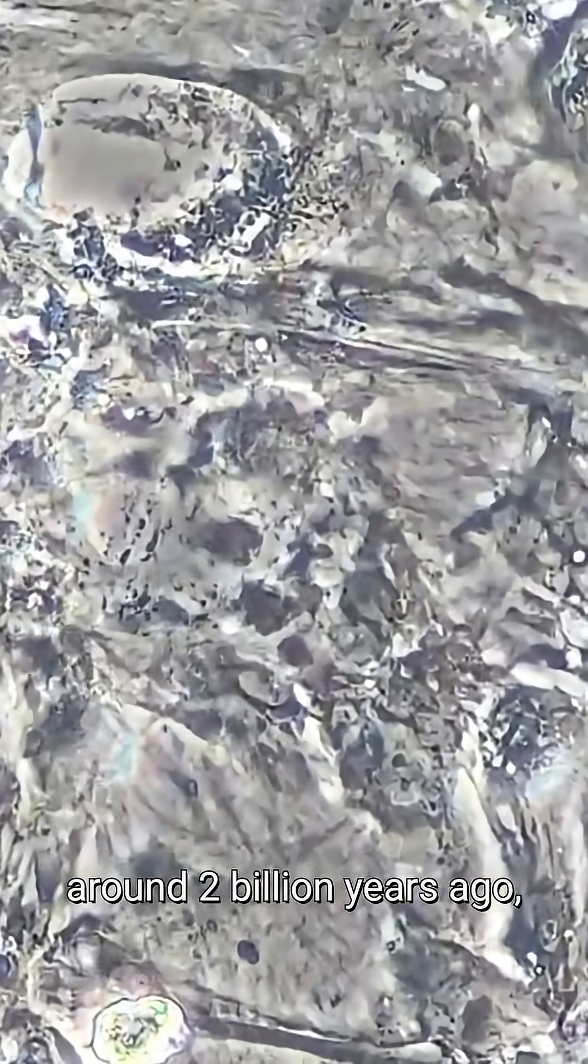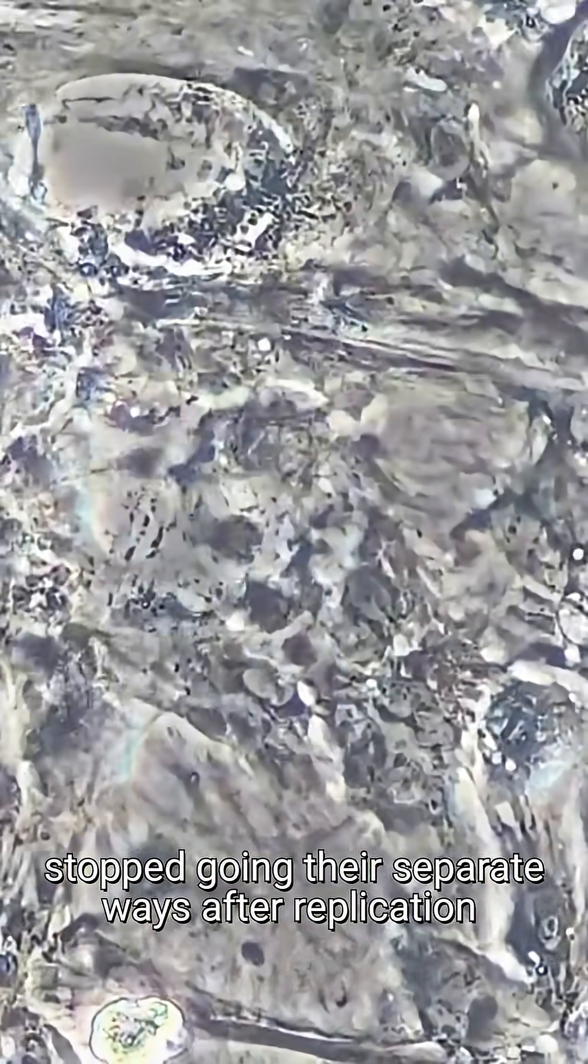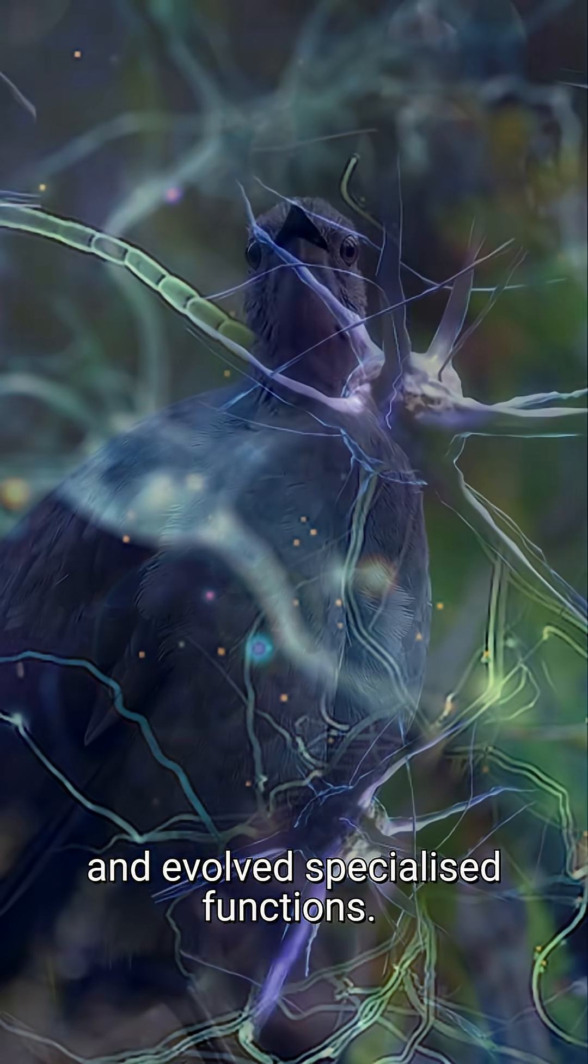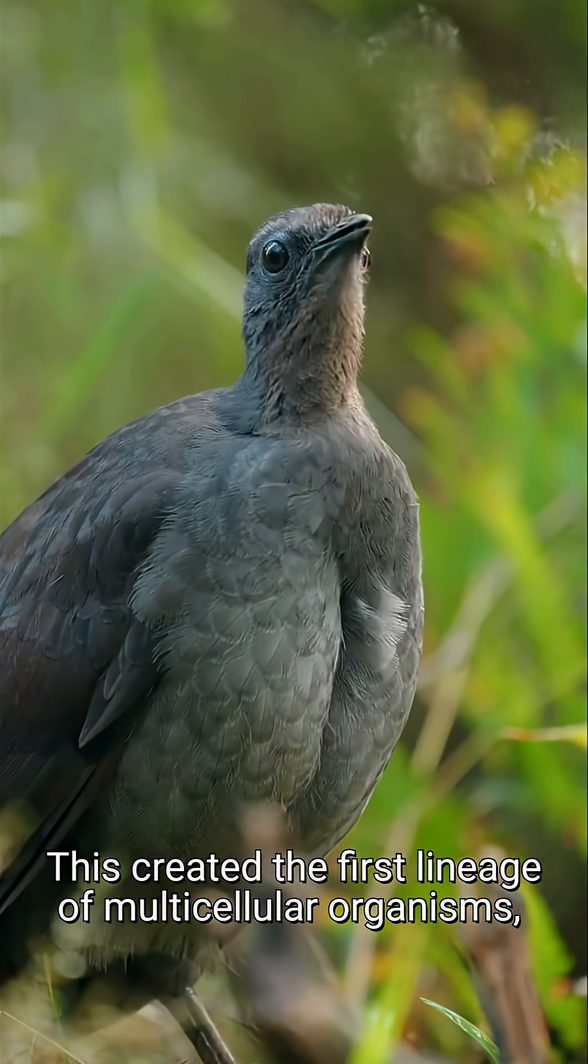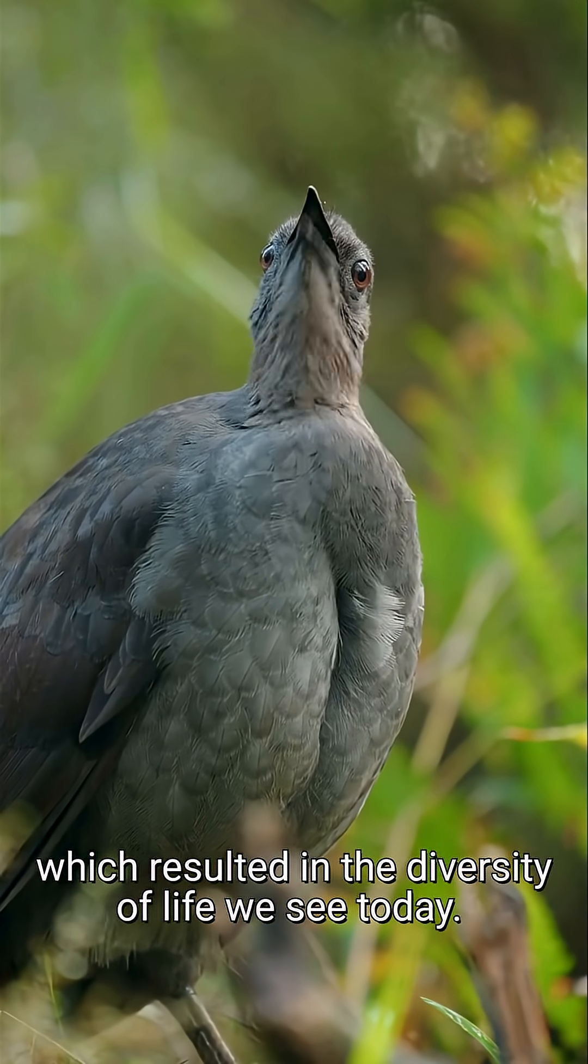Then around two billion years ago, some of these cells stopped going their separate ways after replication and instead stayed together and developed specialized functions. This created the first lineage of multicellular organisms, which resulted in the diversity of life we see today.